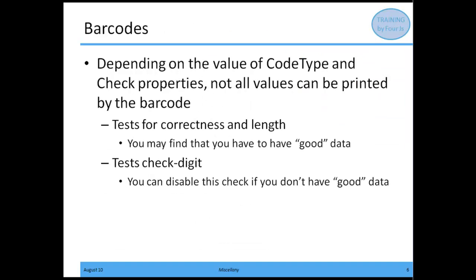Finally, depending upon the value of the code type and the check properties, not all values are going to be able to be printed by the barcode. It tests for the correctness and the length, so you may find that you need to have good data. It can also test the check digit, and you can disable this check if you don't have good data.